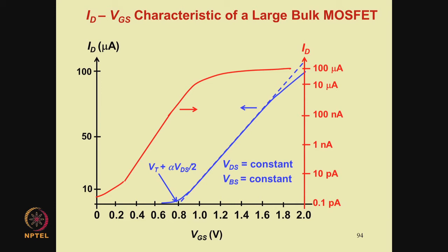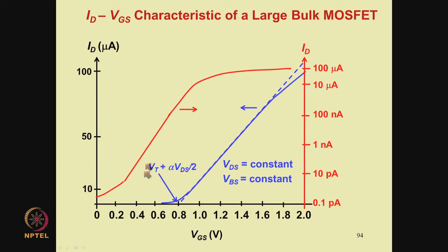This explanation also applies to the ID-VGS curve where ID is plotted on a log scale. The reason ID appears as a straight line over a significant part of the subthreshold region on this graph is because ID varies exponentially with VGS near threshold or in the subthreshold region.